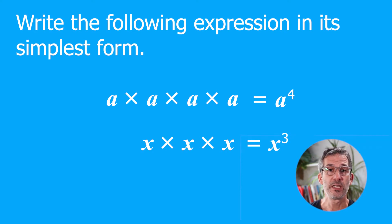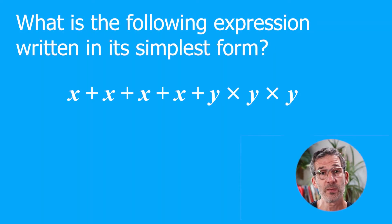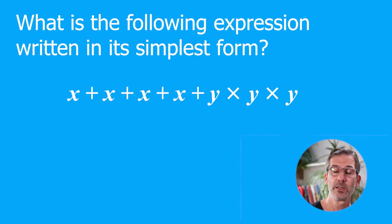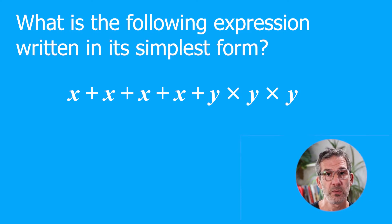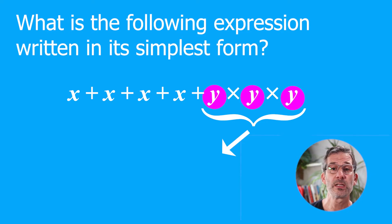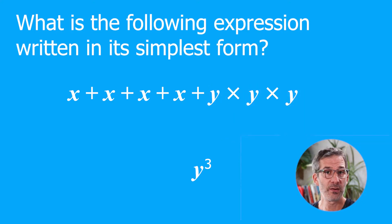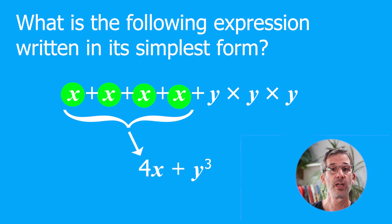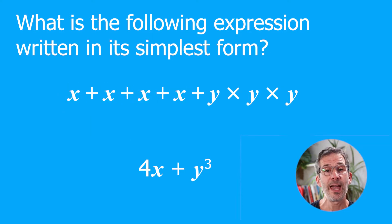Let's look at a question that involves both addition and multiplication — a really important type of GCSE question. When we've got a mixture of operations we have to do them in a particular order: multiplication before addition. Some people use the phrase BIDMAS to help remember the correct order. The multiplication part — y × y × y — gives y to the power of 3, or y cubed. When adding variables, the number of letters goes in front: so in this case it would be 4x.